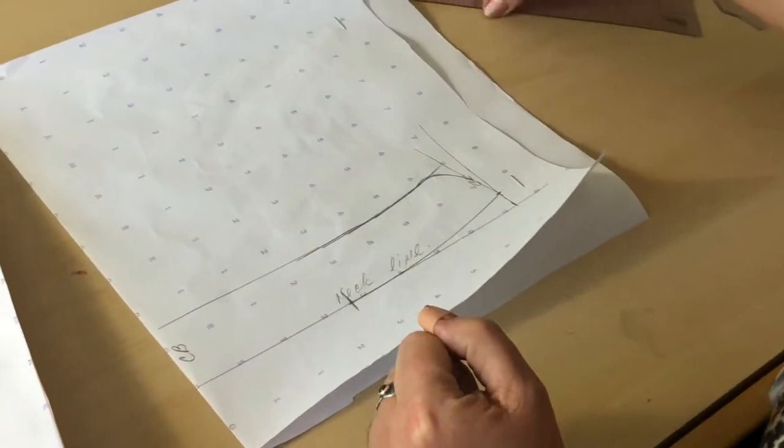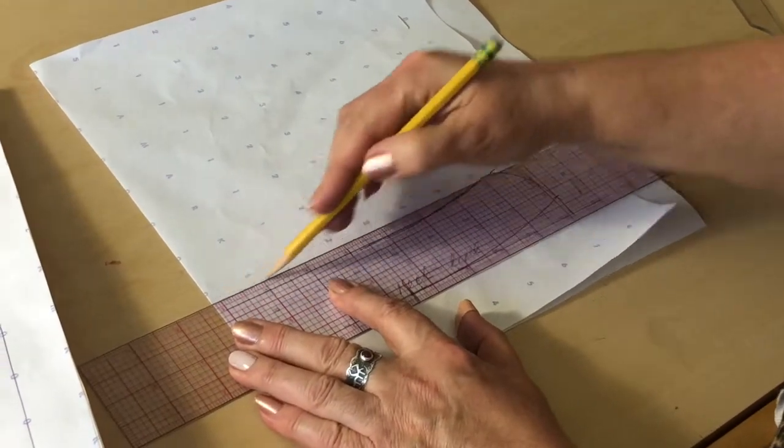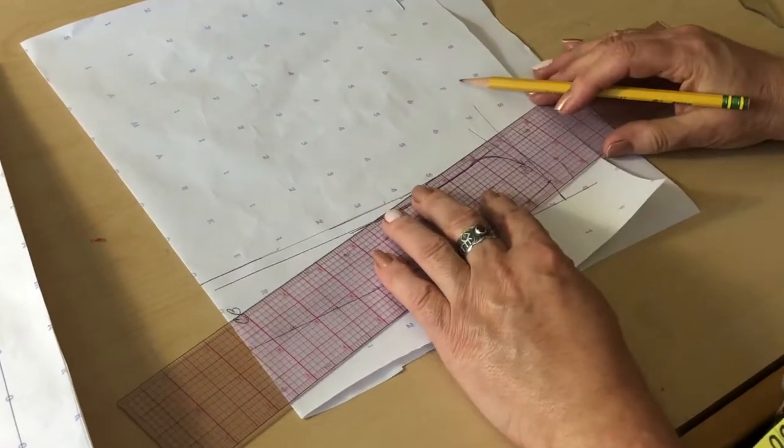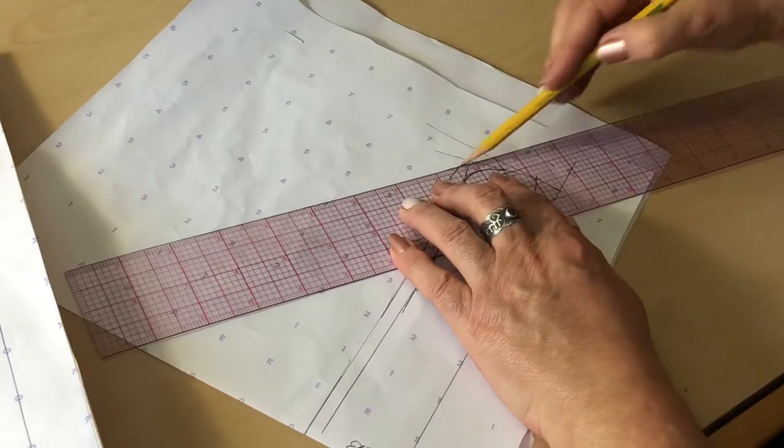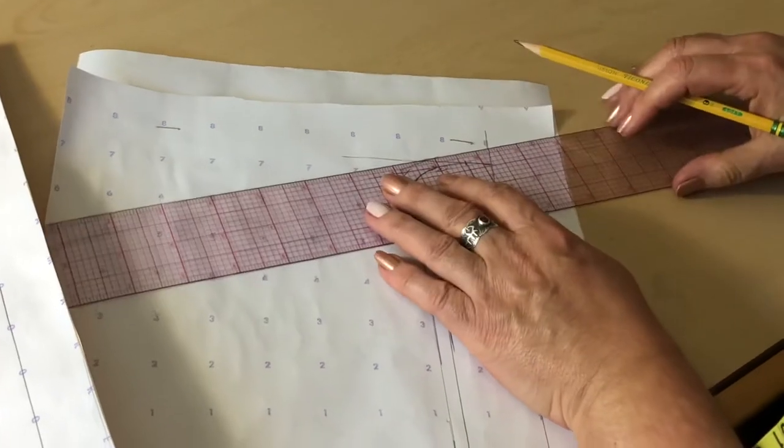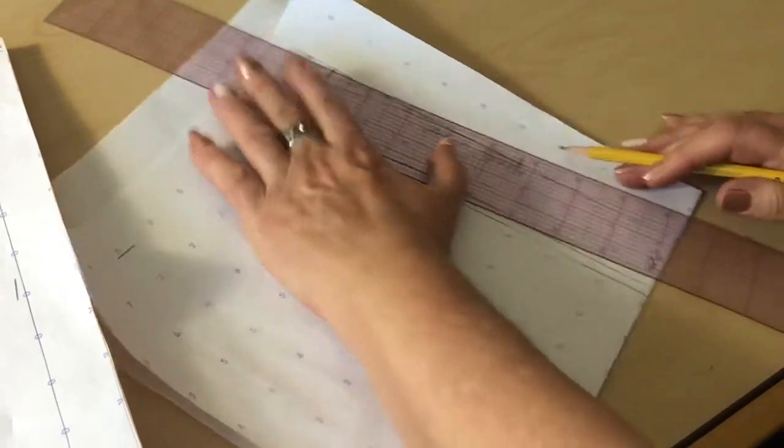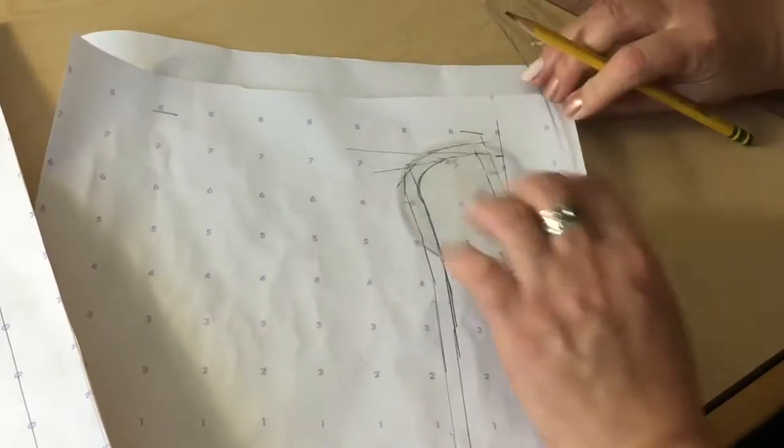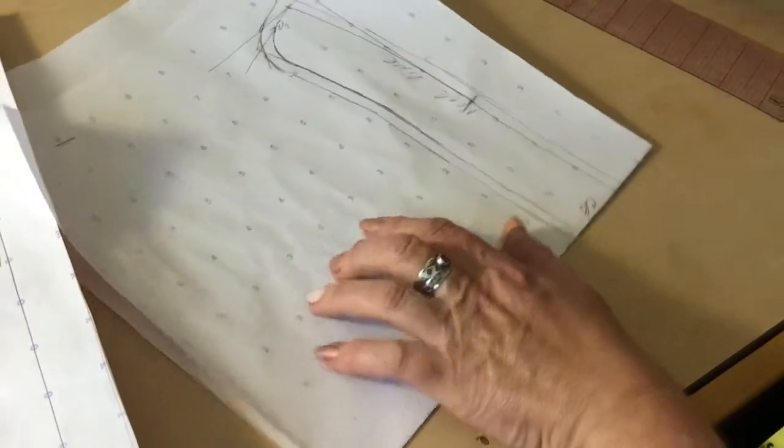So that's my mandarin collar. All I need to do is to add seam allowances, which is going to be quarter inch. Usually the seam allowances for collars are quarter inch only. So I am going to measure my quarter inch all around. By the way at the neckline of our garments we do have quarter inch seam allowance also. So that's how we can remember the measurement of the seam allowance. And I am going to add quarter inch all around. Take my French curve again and smooth out my curves and I am ready to cut.